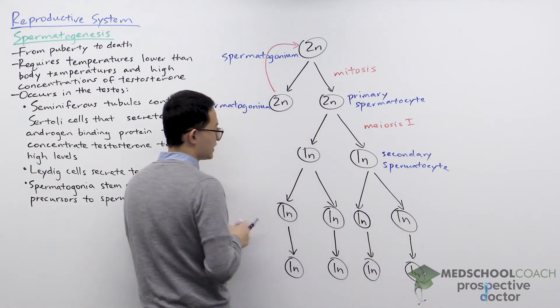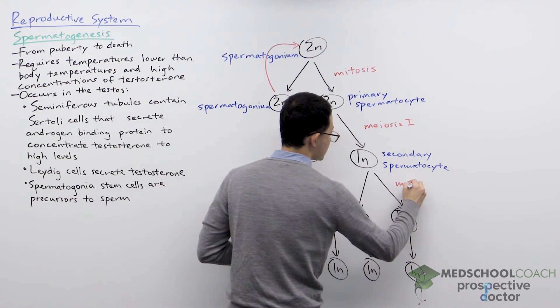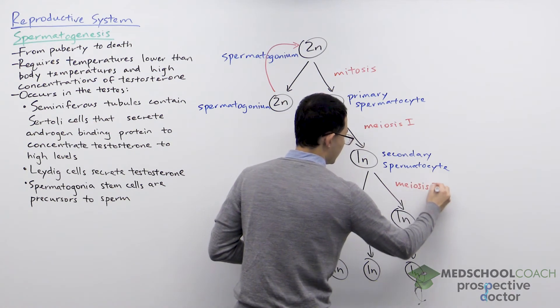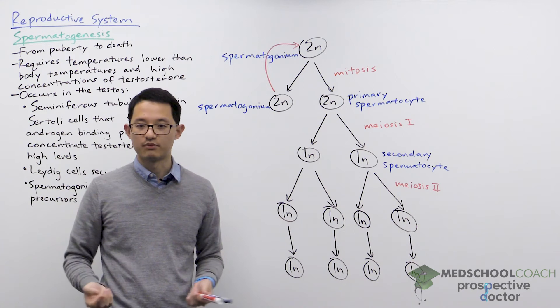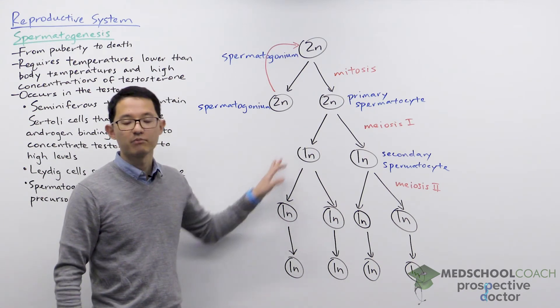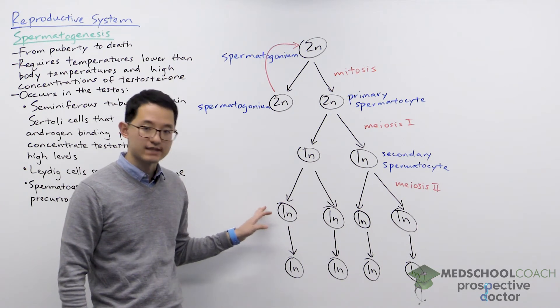The secondary spermatocytes will undergo the second round of meiosis, meiosis II. And in meiosis II the sister chromatids are separated, so the ploidy does not change. It goes from haploid to haploid, but the sister chromatids have been separated.